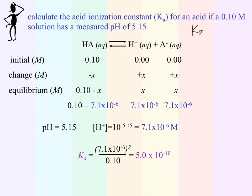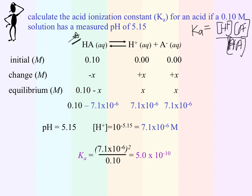Ka is something we need to solve for. In order to write our equilibrium expression for the Ka value, we need to first have an equation. They didn't tell us specifically what acid we have, so we can't indicate the specific conjugate acid and conjugate base, but we can write it in the generic format. So Ka equals H plus times A minus all over HA. These are the concentrations we need to know in order to calculate Ka.